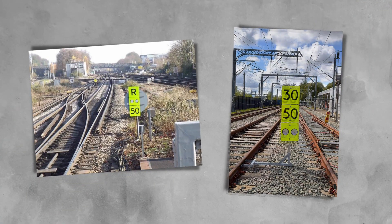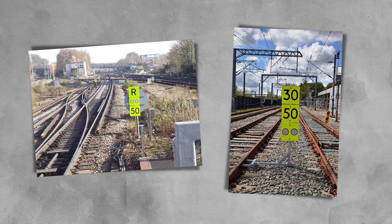Have you ever seen one of these boards when travelling by train or near the railway? These advise drivers that there's a speed restriction in place on that section of the line.